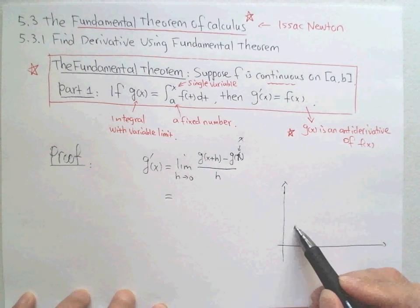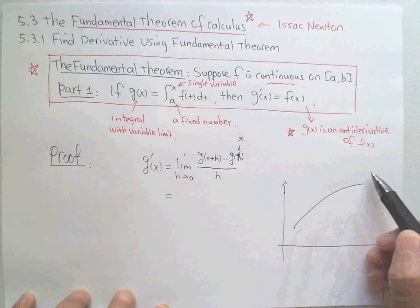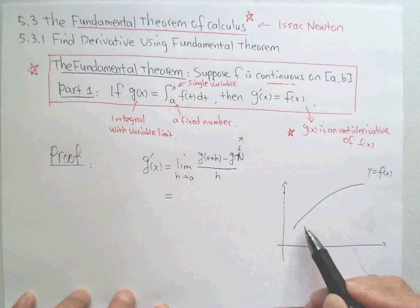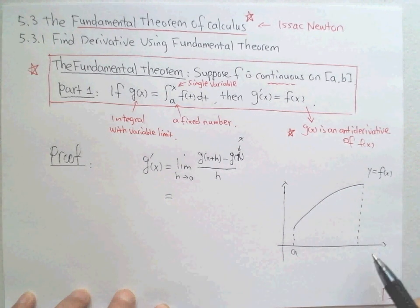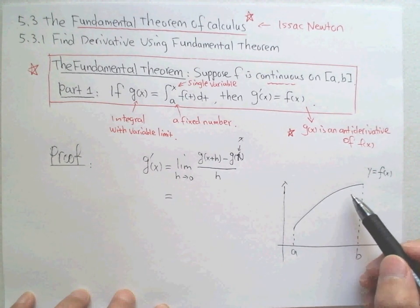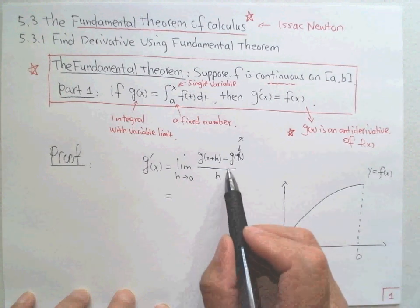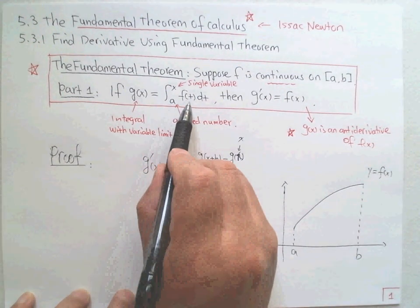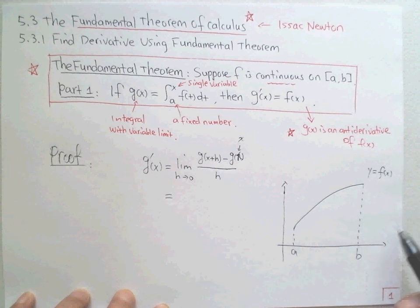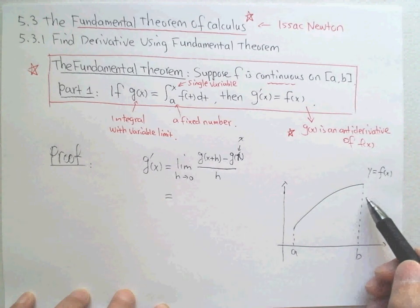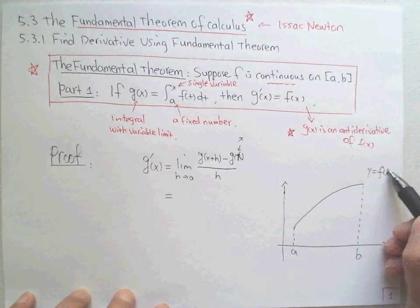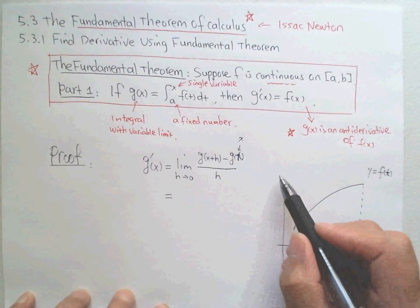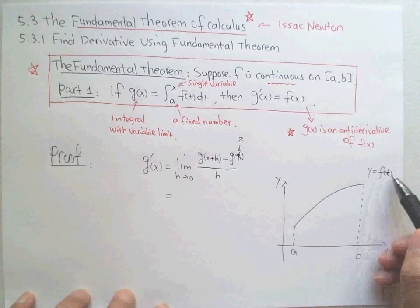I'll draw a graph to describe what g(x) is. If I draw this function y = f(t) — note I change the variable to t — the integral domain is from a to b, and this function is continuous. The variable here is t.